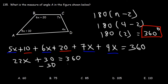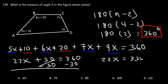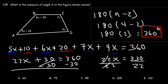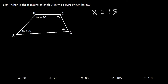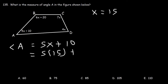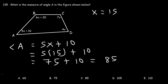So we have 22x plus 30 equals 360. Subtracting 30 from both sides gives 330, then dividing both sides by 22, x equals 330 divided by 22, which is 15. Now we can calculate the measure of angle A, which is 5x plus 10: 5 times 15 is 75, plus 10 is 85. So the measure of angle A is 85°. Answer choice C is the answer.